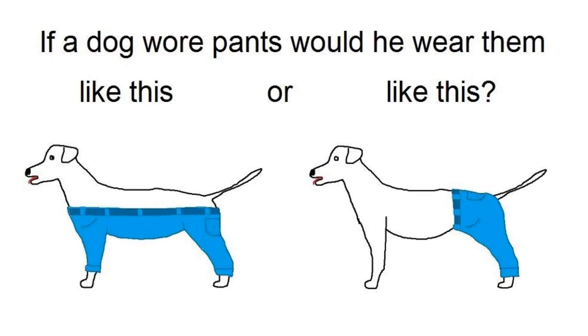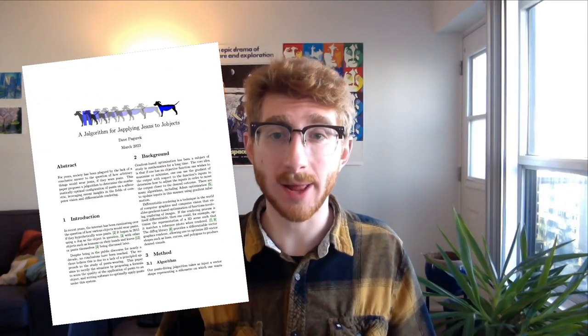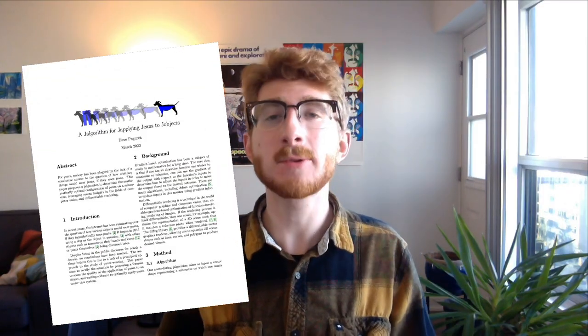Hi, I'm Dave, and today I'm going to talk about a problem we face in society, which is that we don't have a conclusive answer to the question of how a dog would wear pants if a dog wore pants. With my paper, A Geogorithm for Applying Jeans to Jobjects, I hope to address this issue.